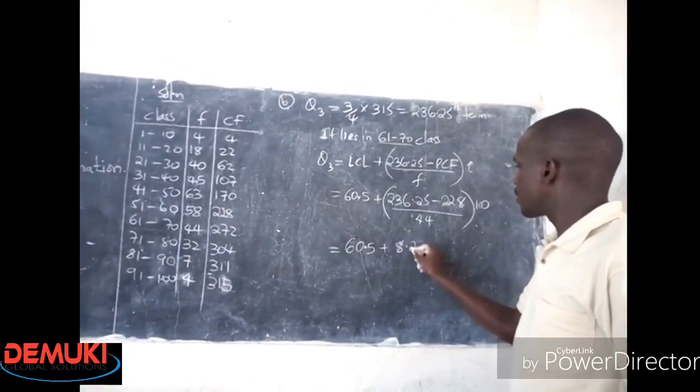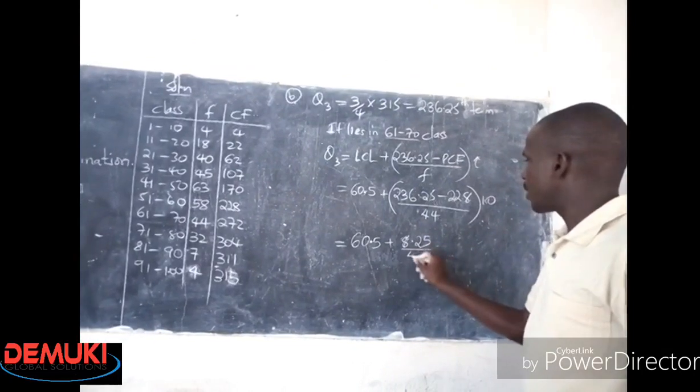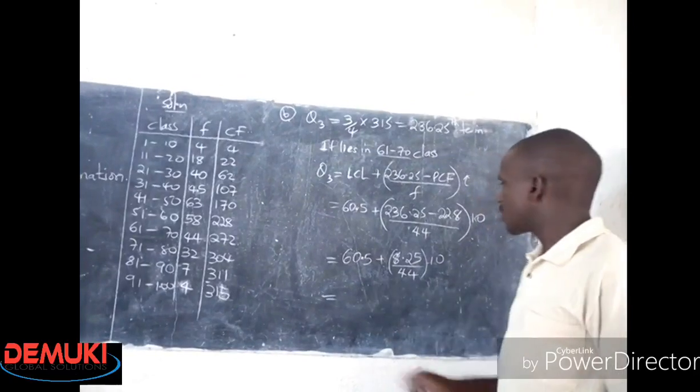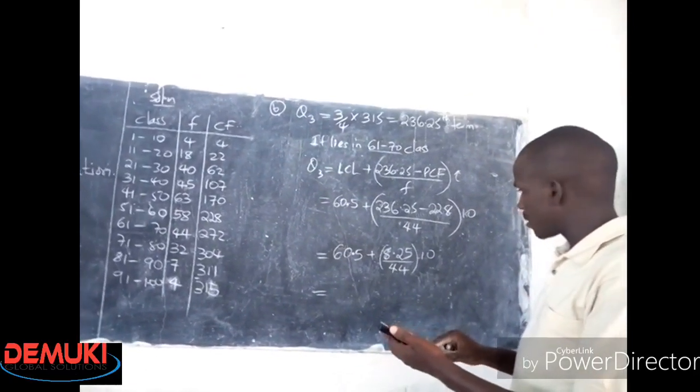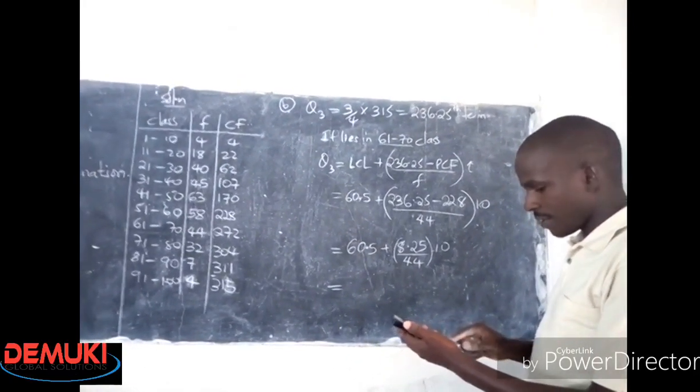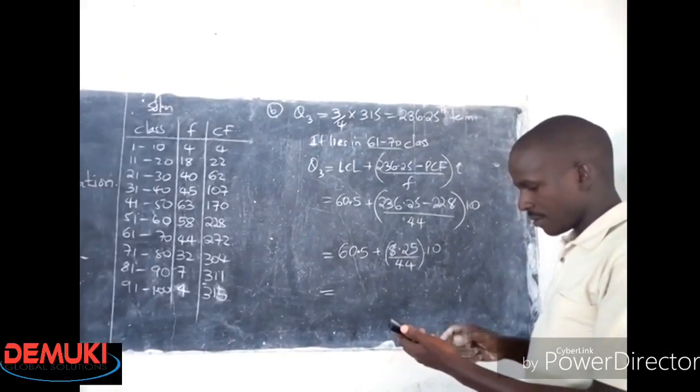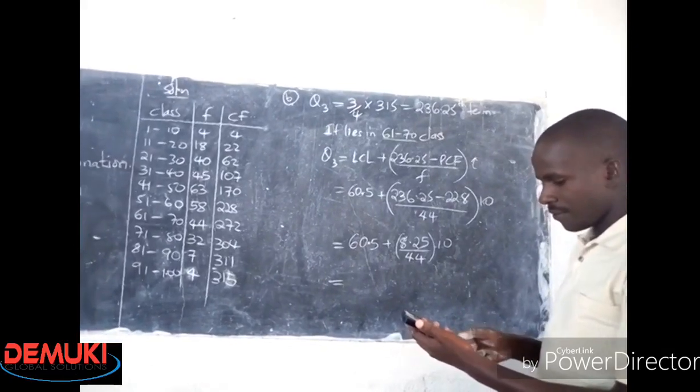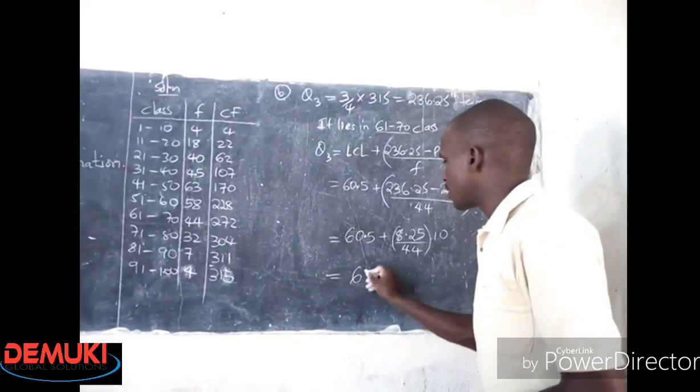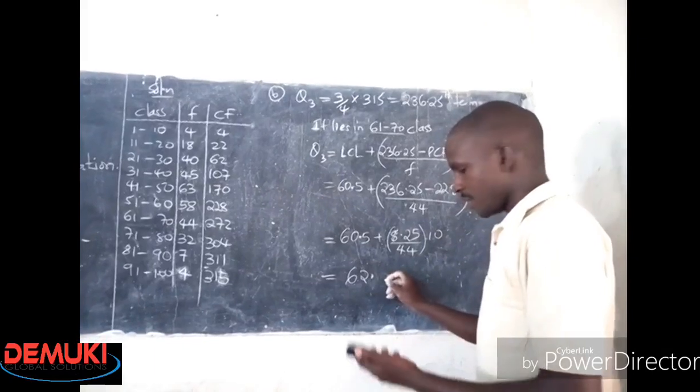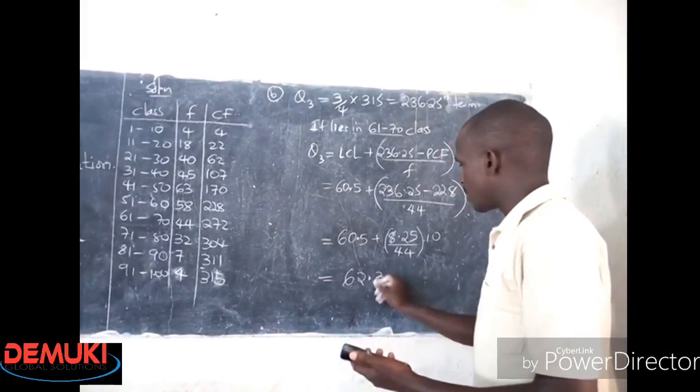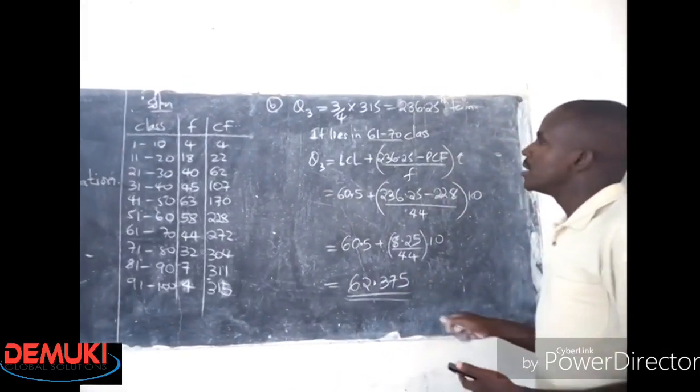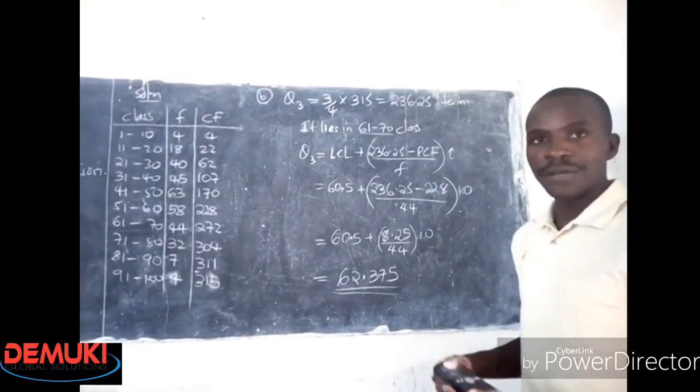8.25 over 44 times 10. And this one simply gives us 62.375, 62.375.